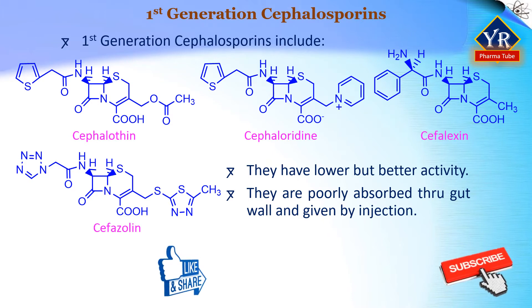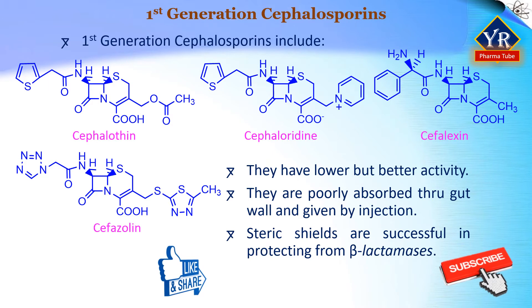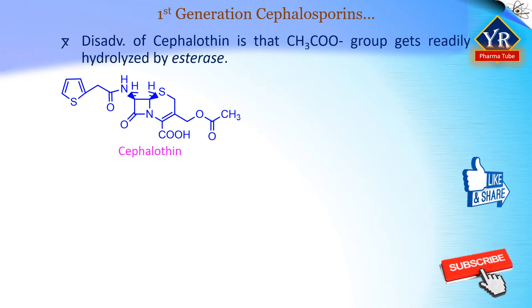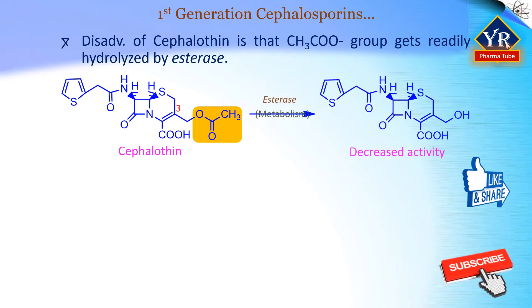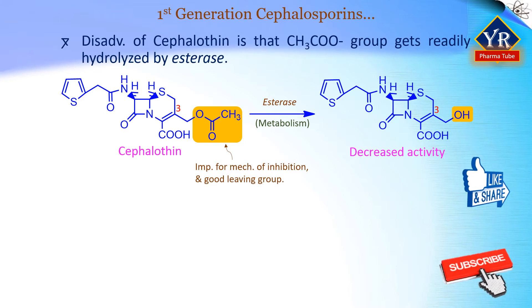These contain beta-lactamases, which are more effective than the beta-lactamases of gram-positive organisms. Steric shields are successful in protecting cephalosporins from these beta-lactamases, but also prevent them from inhibiting the transpeptidase target enzymes. One of the most commonly used first-generation cephalosporins was cephalothin. A disadvantage with cephalothin is the fact that the acetyloxy group at position 3 is readily hydrolyzed by esterase enzymes to give the less active alcohol. The acetyloxy group is important to the mechanism of inhibition and acts as a good leaving group, whereas the alcohol is a much poorer leaving group. Therefore, it would be useful if this metabolism could be blocked to prolong activity.